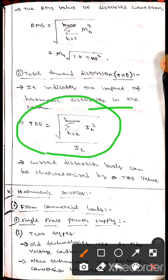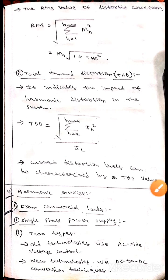The formula for TDD is TDD equals root over sigma h equals two to h max, Ih square by IL. Current distortion levels can be characterized by a TDD value.